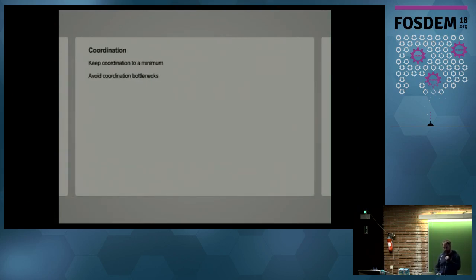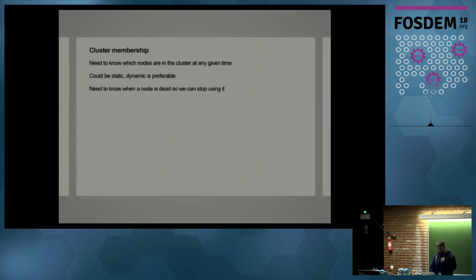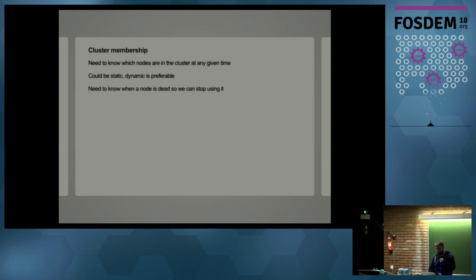So I mentioned coordination, and being able to think about the system in terms of coordination was really helpful. And the thing I realized was, if I wanted to support a high throughput on ingestion, I wanted to keep coordination to an absolute minimum, because that would help reduce the complexity of the system, and as a result, make it more reliable. And also avoid coordination bottlenecks, because those bottlenecks could be a bottleneck for the ingestion throughput. So the other thing was to know which servers were part of the cluster at any given time.